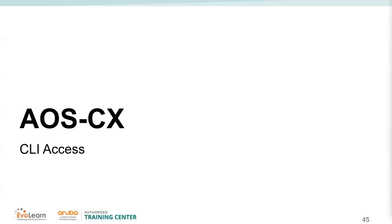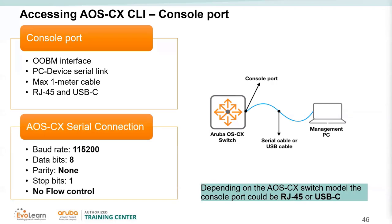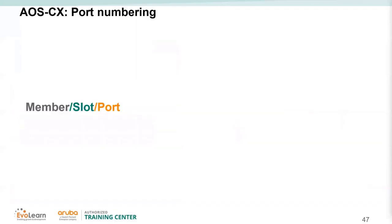Every switch should have a console interface. Traditionally we used serial connections, then moved to RJ45, and now many vendors use USB-C for the console. Within the CX platform, some models support both USB-C and RJ45 console, some support only one. The interface naming convention in CX is member/slot/port — for example, 1/1/1 or 1/2/3.